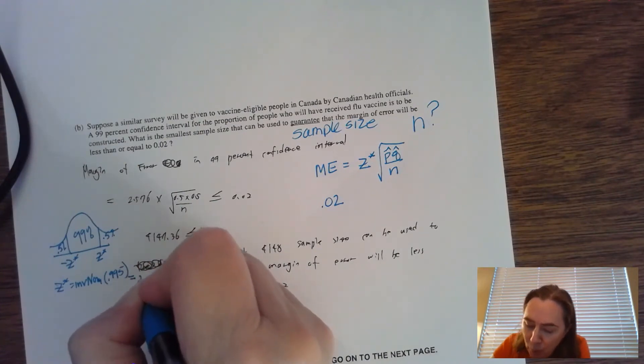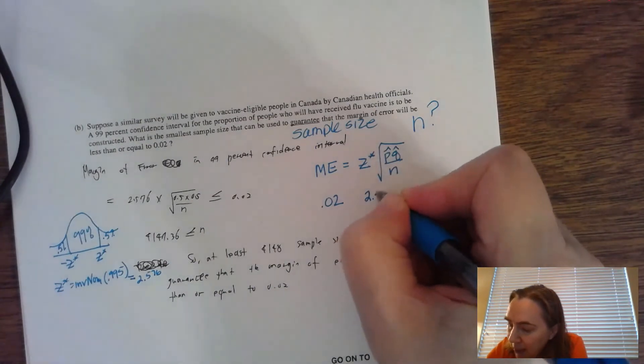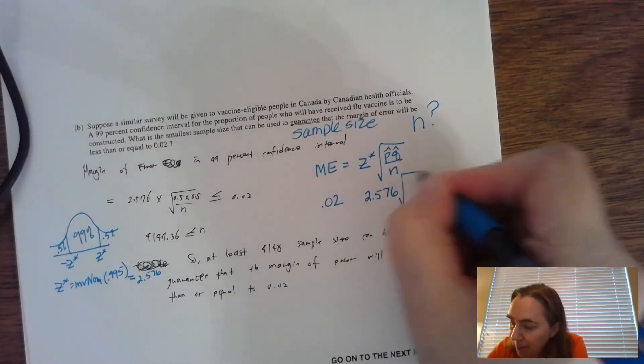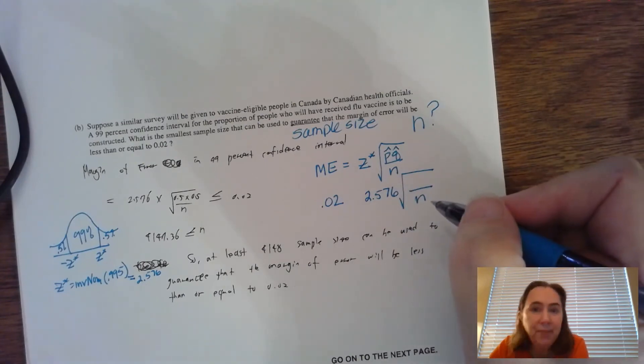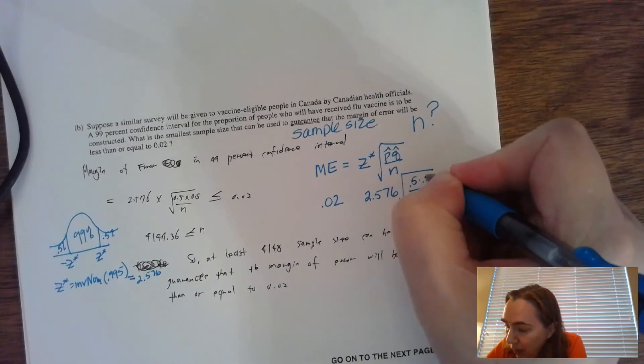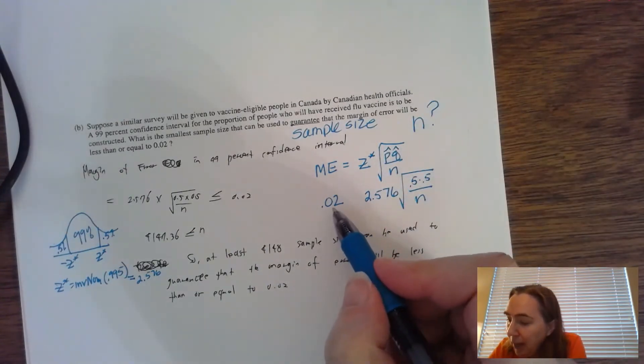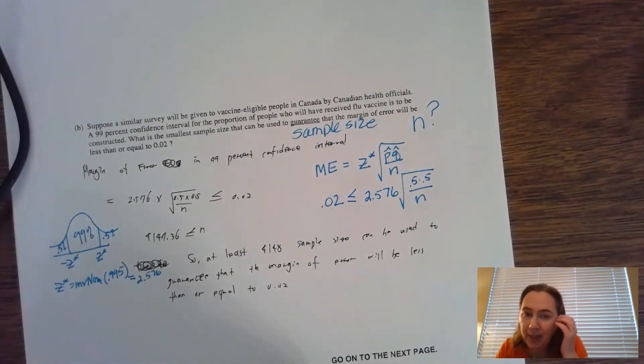That's what I'm going to plug in for z*. N is what we're trying to find. P-hat and q-hat we don't know, so we're going to use 0.5 and 0.5. We want the margin of error to be less than or equal to that, so I'm going to go ahead and put an inequality there. You don't have to technically have it, but when you restate your answer in words, you can address that that sample size or higher, or at least that sample size, will give you that margin of error.